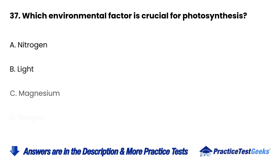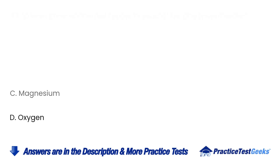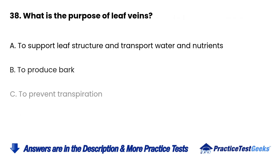Question 37: Which environmental factor is crucial for photosynthesis? a. Nitrogen. b. Light. c. Magnesium. d. Oxygen.